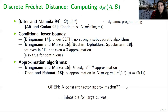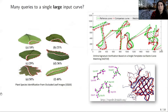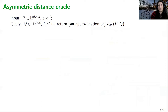This might be a problem when dealing with very large curves, because quadratic time may be infeasible. Also there are applications with many queries to a single input curve — for example in pattern matching or signature verification — and one way to deal with this is to construct a distance oracle for the curve. A distance oracle takes as input a curve p of length m and a parameter epsilon, and given a query curve q of length k, where k is smaller than m, it returns an approximation of the distance between p and q. This is called an asymmetric distance oracle, and our goal is to have no dependency on m in the space usage.